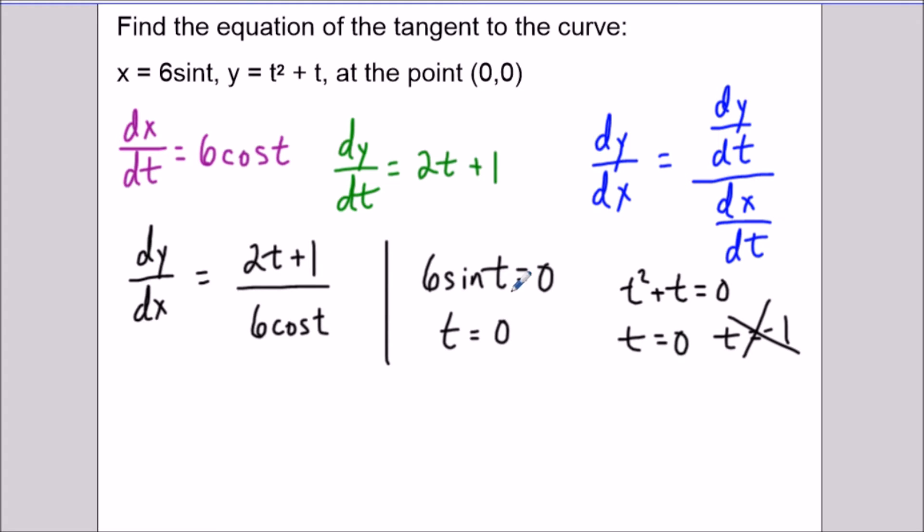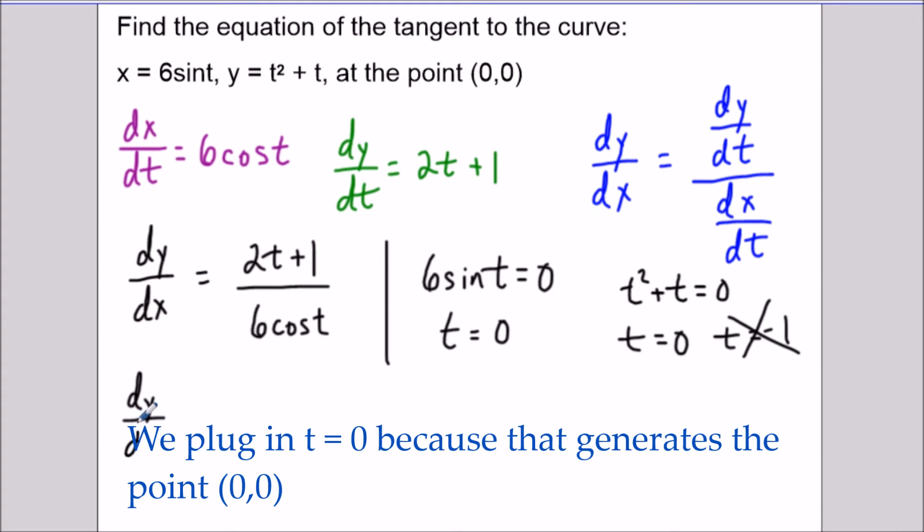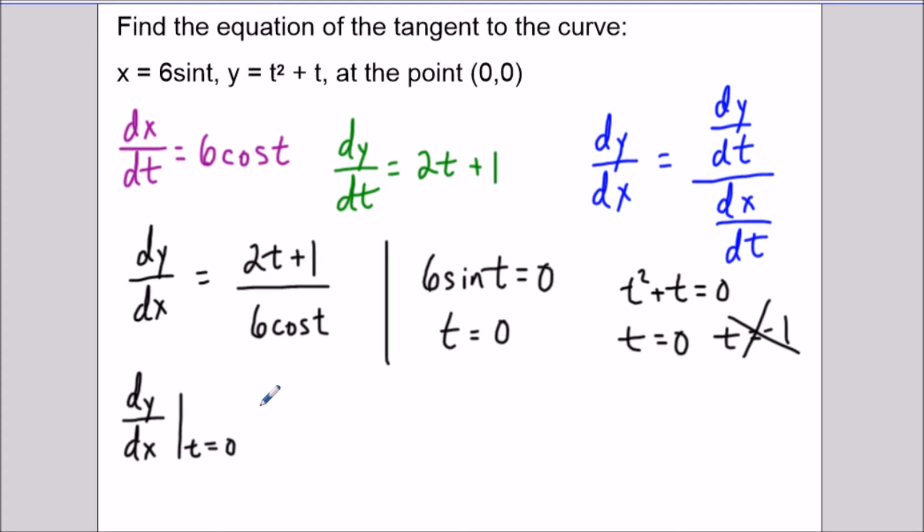So then to continue here, what we want to do is substitute t equals zero into the derivative. So we have dy/dx at t equals zero and when we substitute here, we're going to have 2(0) + 1 over 6cos(0). And then in the numerator we have one and 6cos(0) is just six. So this represents the slope of our line.